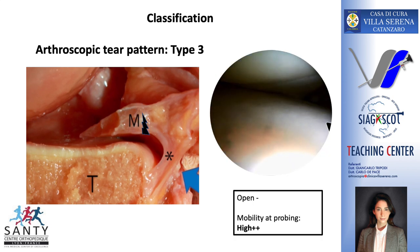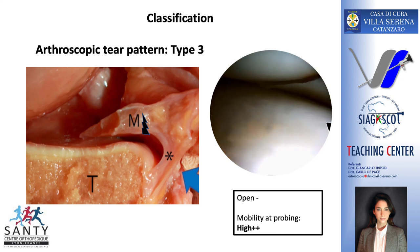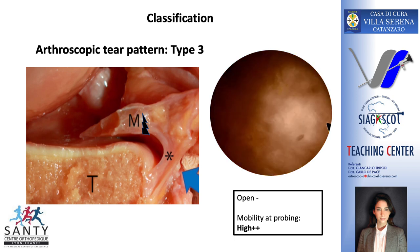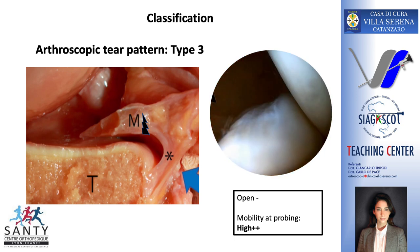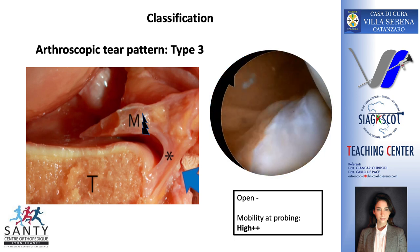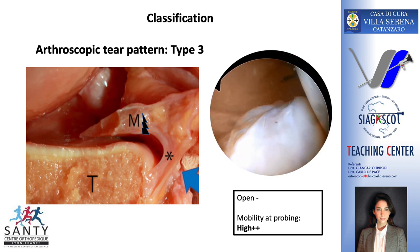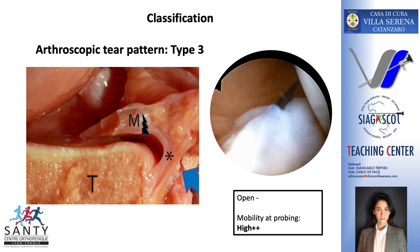Here is the type 3. It's the hidden lesion. The meniscus mobility is important if tested through the anterior portal. However, if you look through the transnotch view, the lesion is not visible. It's actually hidden under a superficial layer of scar tissue. This scar tissue can be easily debrided through the posterior medial portal.